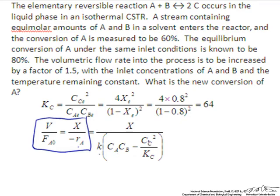Since this is an elementary reaction, we can express the rate of consumption of A as a rate constant times the product of the concentrations of A and B minus the concentration of C squared, since 2 C molecules have to react, divided by the equilibrium constant. We know this value is equal to 64. We see we have a mixed expression with conversion in the numerator and concentration variables in the denominator.